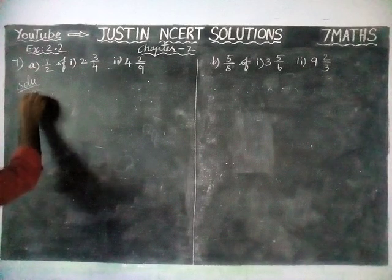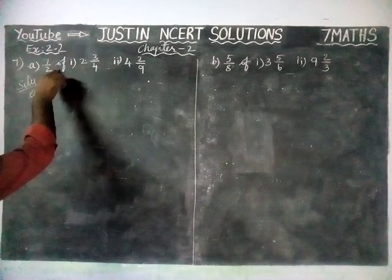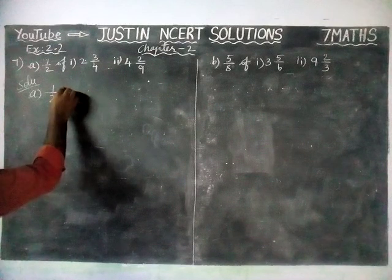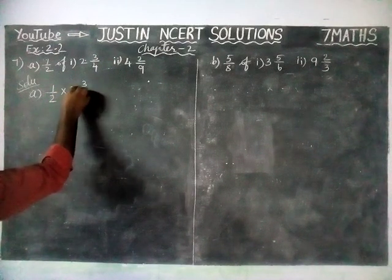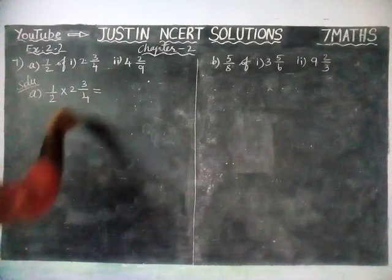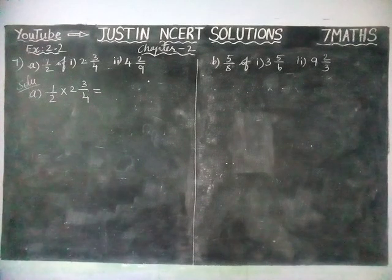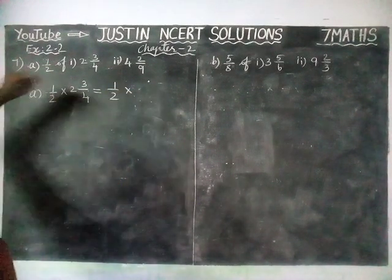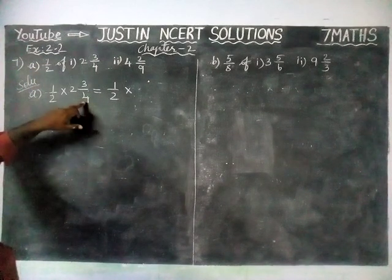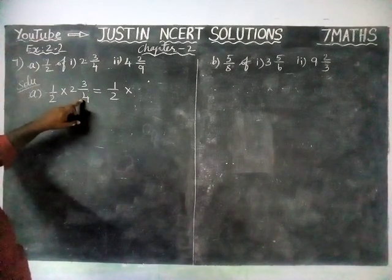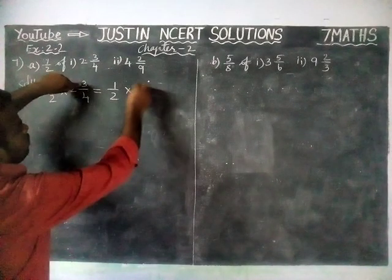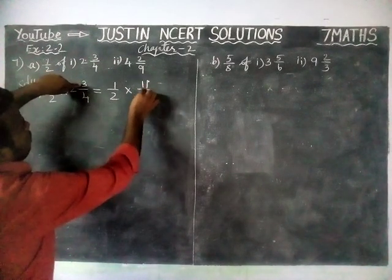First question, Option A, Roman numeral 1: 1/2 of 2¾. This is in mixed fraction, so we have to convert it into improper fraction. First step: 1/2 into — we have to multiply the whole part into denominator — 2 into 4. Two fours are 8, and 8 plus 3 is equal to 11, so we get 11/4.